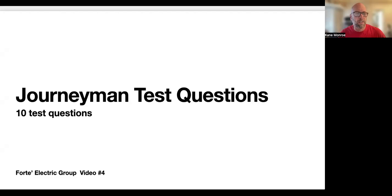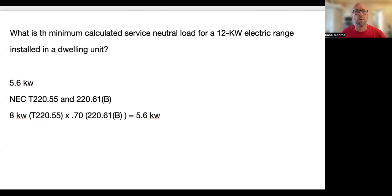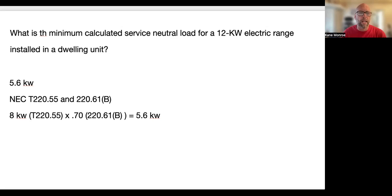Alright, journeyman test questions — 10 questions, video number four. First question: what's the minimum calculated service neutral load for a 12kW electric range installed in a dwelling unit? That's 5.6kW. You look at Table 220.55 for electric ranges, then utilize 220.61(b), which tells you that you can take 70% of the load. At 12kW on that table, go all the way to the right under one electric range — it puts you in the C column, which tells you it's 8kW for a 12kW range. Then you take 70% of that and come up with 5.6kW.